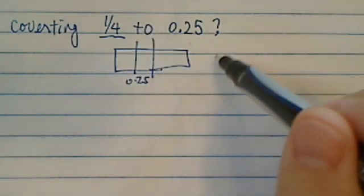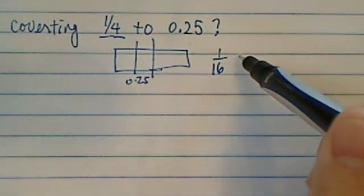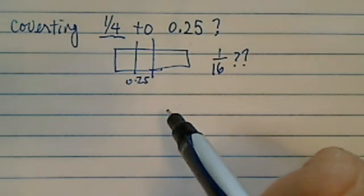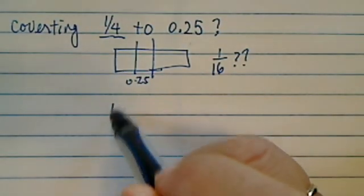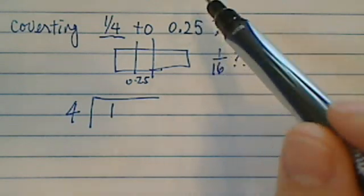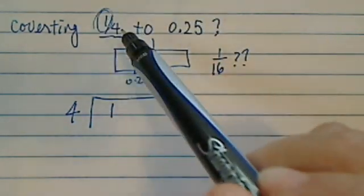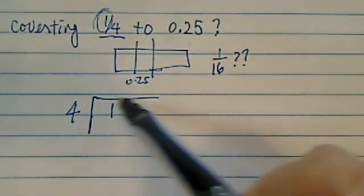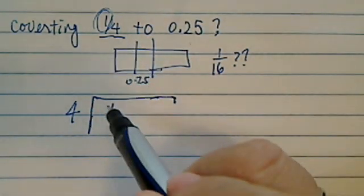But when you get a little more complicated, say 1 over 16th, without a proper procedure or process, you get stuck. So let's cover how to convert a fraction into a decimal point. What you want to do is grab whatever is on the top, put it inside a house, pretending this is a house, and we're going to do a long division.